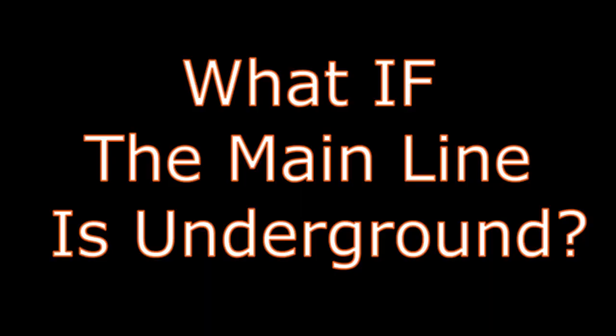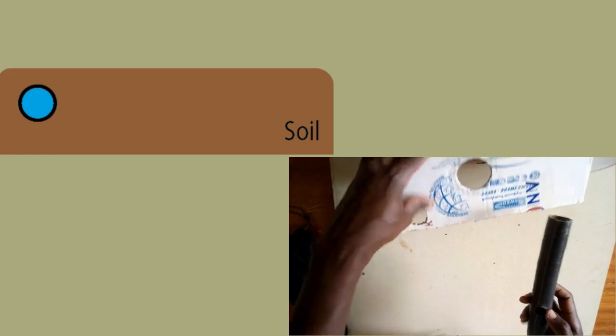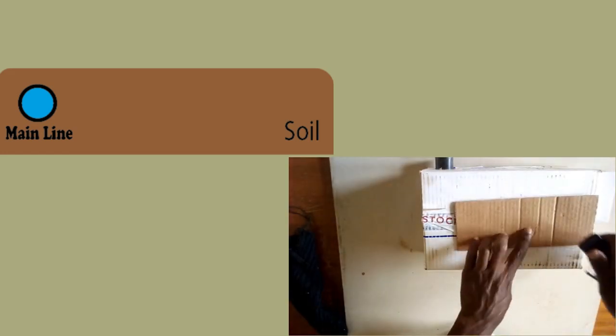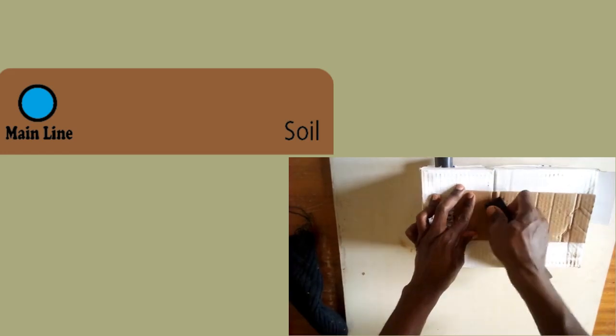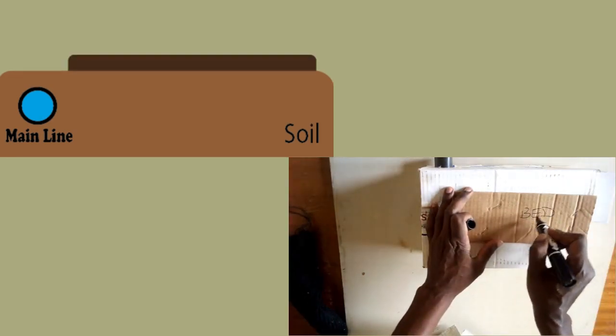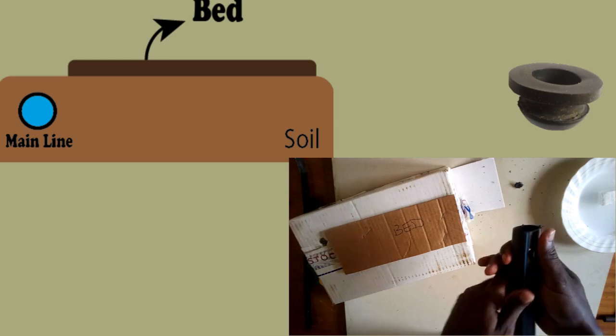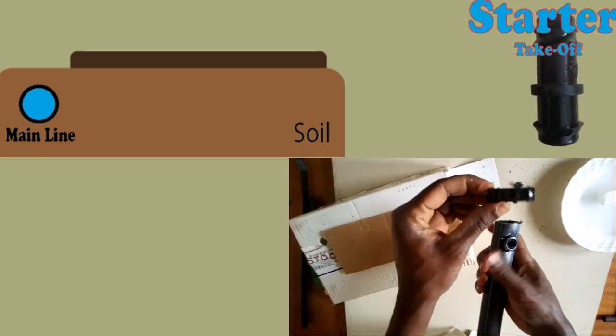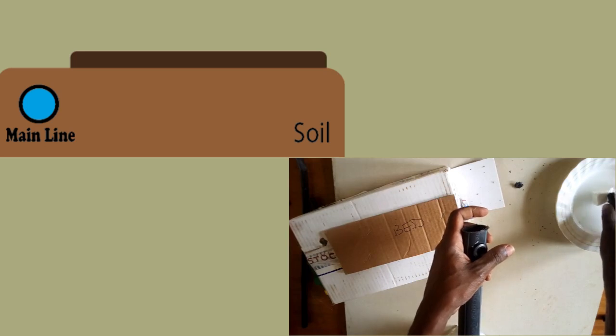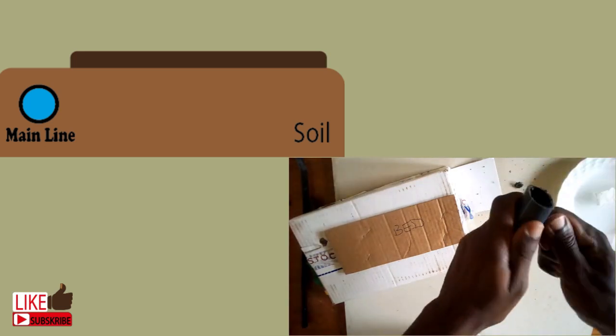Now, it's not every time that the main line is at the same level as the bed. Assume your main line is buried in the soil and your bed is on a higher level. And you want to connect the drip line at the bed level. What do you do? Well, you first install the rubber starter as usual. And then, you can use this kind of starter. Of course, this starter will be buried in the soil in the end.